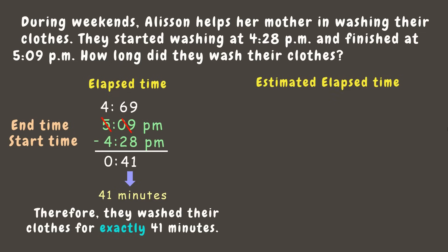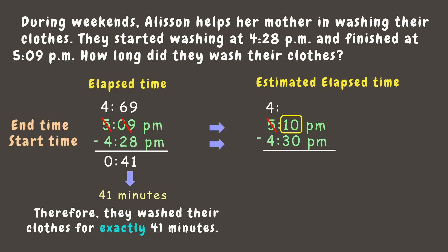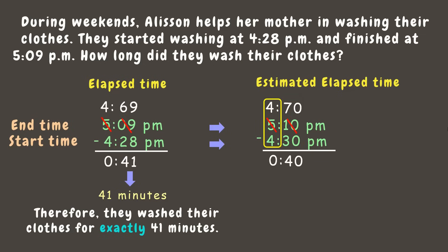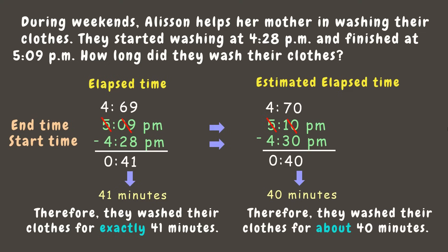Now for the estimated elapsed time: round 5:09 PM to 5:10, and 4:28 PM to 4:30. Subtracting: since 10 is smaller than 30, borrow 1 hour from 5, making 5 become 4, and add 60 minutes to 10, giving 70. Then 70 minus 30 is 40, and 4 minus 4 is 0. Therefore they washed their clothes for about 40 minutes.